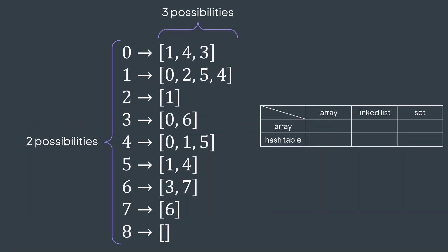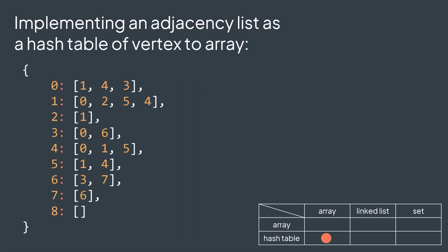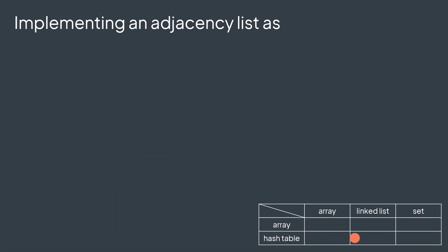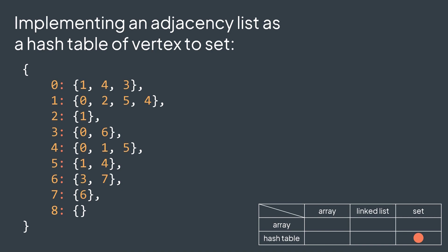We have two possibilities for the first dimension, three possibilities for the second dimension. So in total, we have six possibilities. We can implement an adjacency list as an array of arrays, an array of linked lists, an array of sets, a hash table of vertex to array, a hash table of vertex to linked list, and a hash table of vertex to set. But which one to choose?